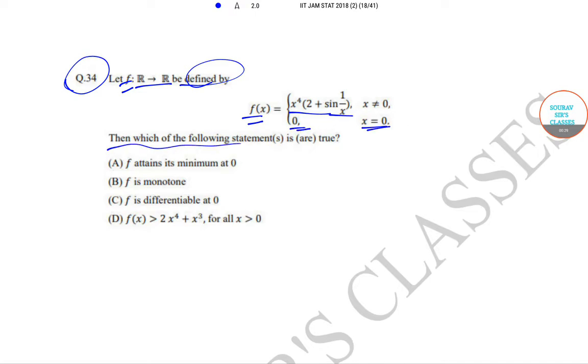Then which of the following statements is or are true? (A) f attains its minimum at x equal to 0, (B) f is monotone, (C) f is differentiable at x equal to 0, and (D) f(x) is greater than 2x^4 plus x^3 for all x greater than 0. This is what we have got.